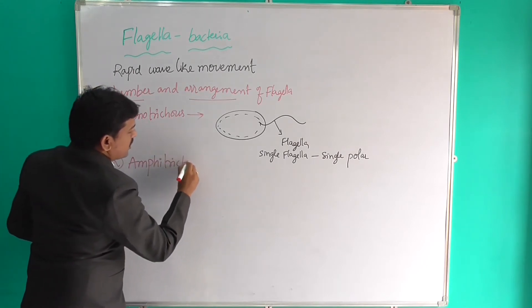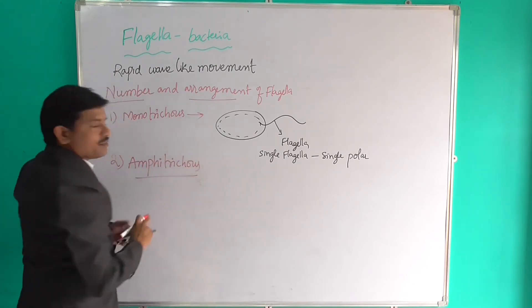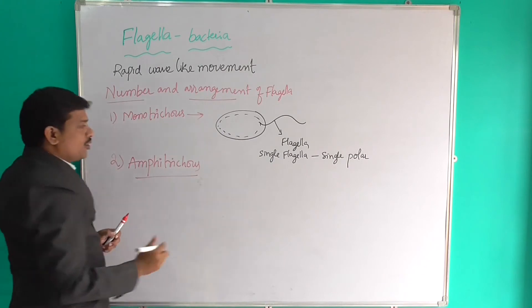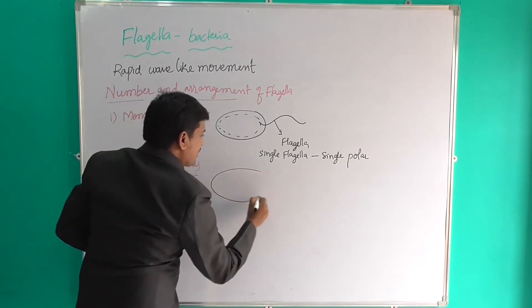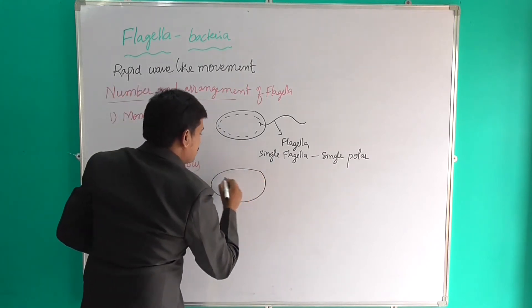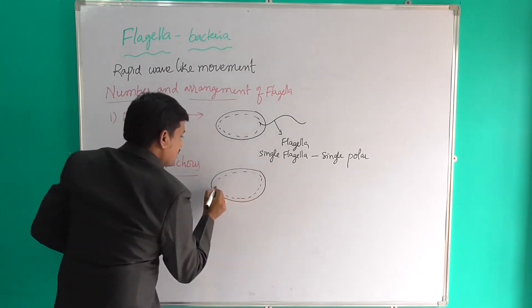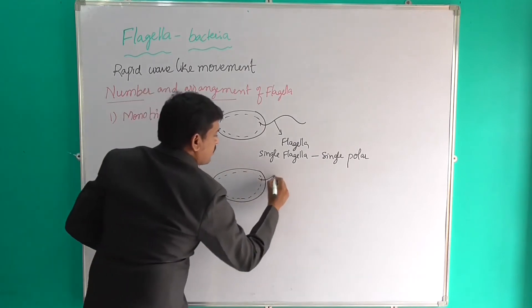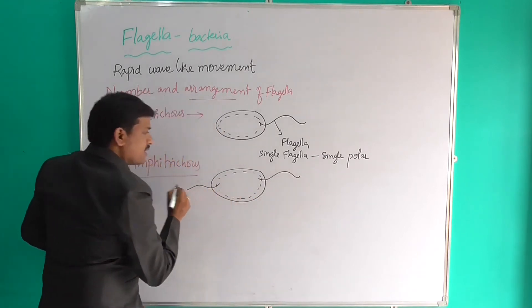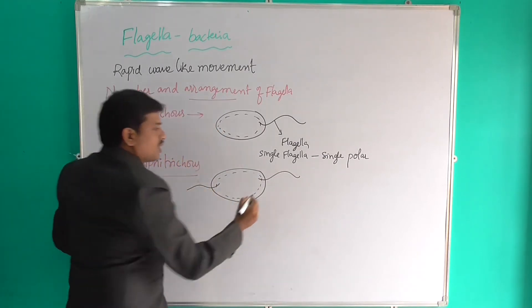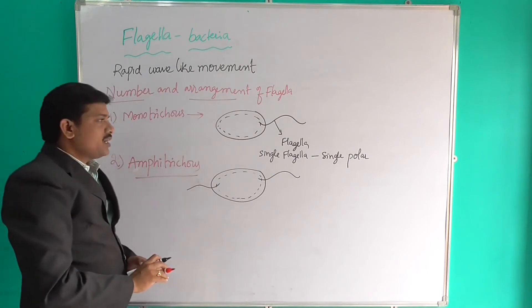What is meant by amphitrichous? See here, one diagram is there. Like this — here one flagella on this side and one flagella on the right side. This is also called as flagella on both ends.